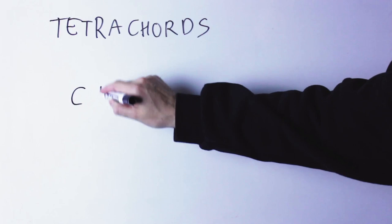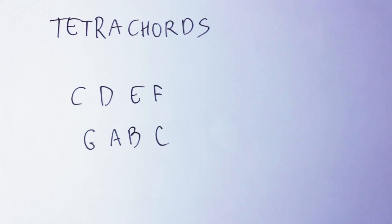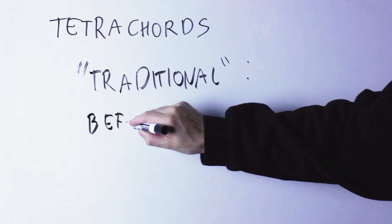Tetrachords are not chords, despite the name. Tetrachords are simply fragments of scale four notes long, like C, D, E, F, or G, A, B, C. Those are two tetrachords.